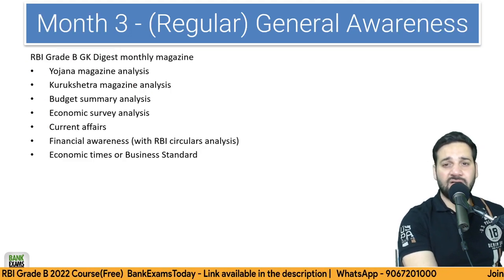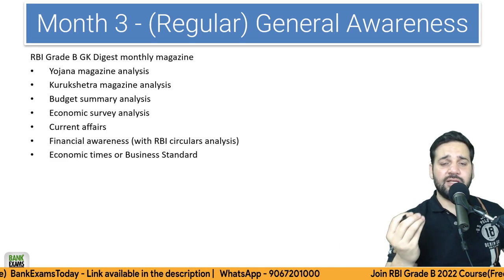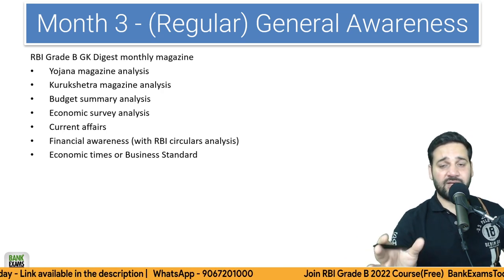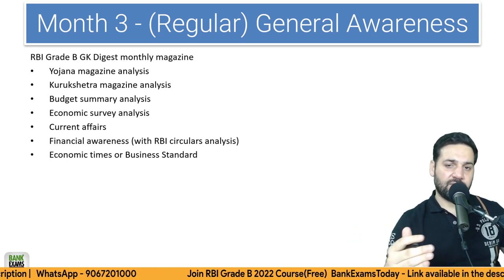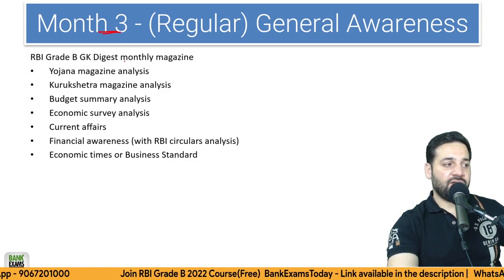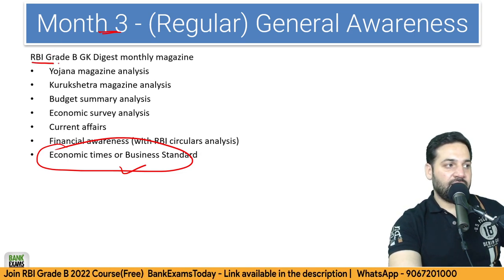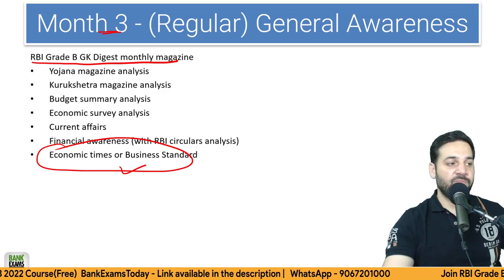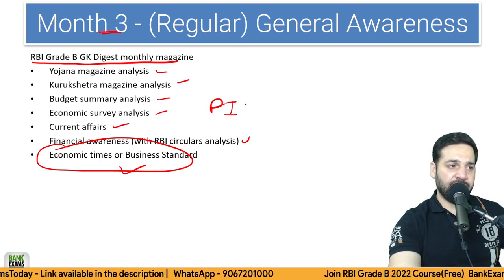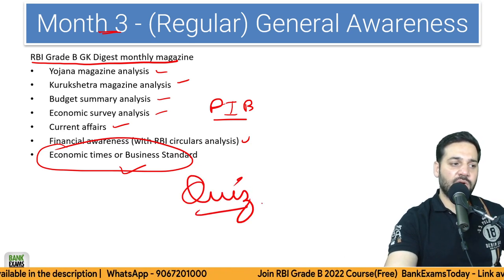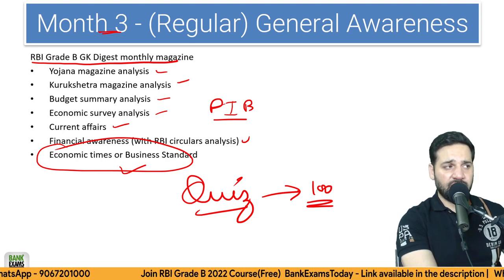For General Awareness, prepare it on a regular basis. A common mistake students make is not preparing Phase 2 alongside Phase 1 — don't make that mistake. Prepare both simultaneously. Follow Economic Times or Business Standard, and if reading online, follow Mint. Along with that, the RBI Grade B GK Digest monthly magazine is more than sufficient — it includes Yojana analysis, Kurukshetra, budget summary, economic survey, current affairs, financial awareness, and 100 important quiz questions every month.